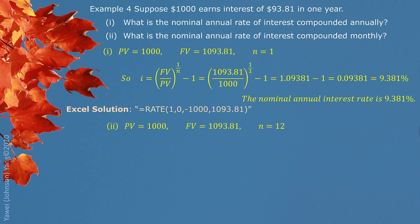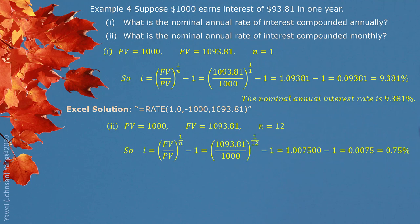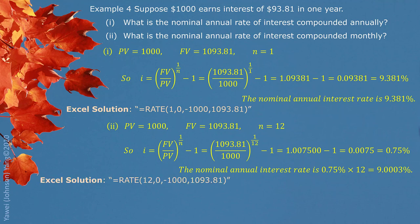For the second situation, same future value, same present value, but compounded monthly. So one year being considered, 12 compounding periods. Turns out 0.75% is monthly rate. We need to get nominal annual rate. In that case, multiply by 12. We got 9.0003% is the annual interest rate. Excel solution shown here. You can try in Excel.